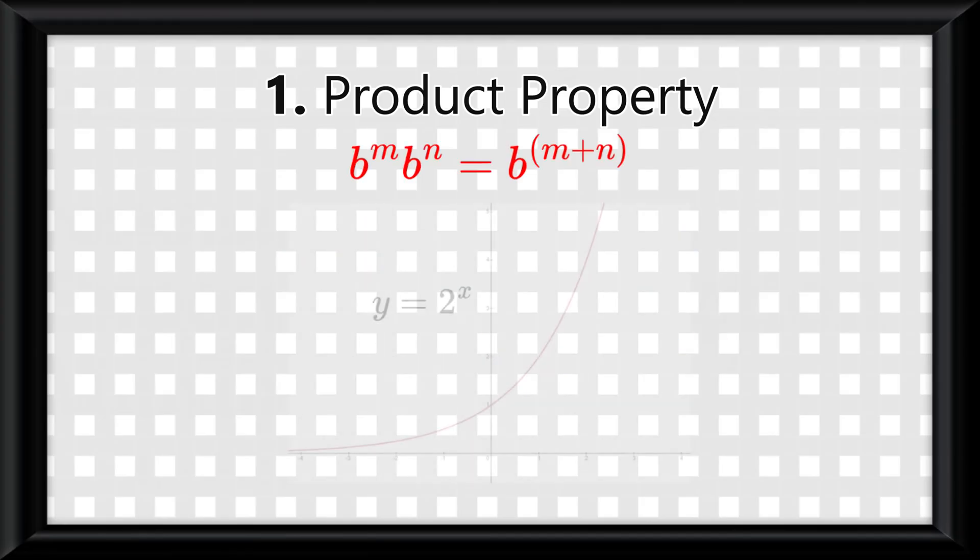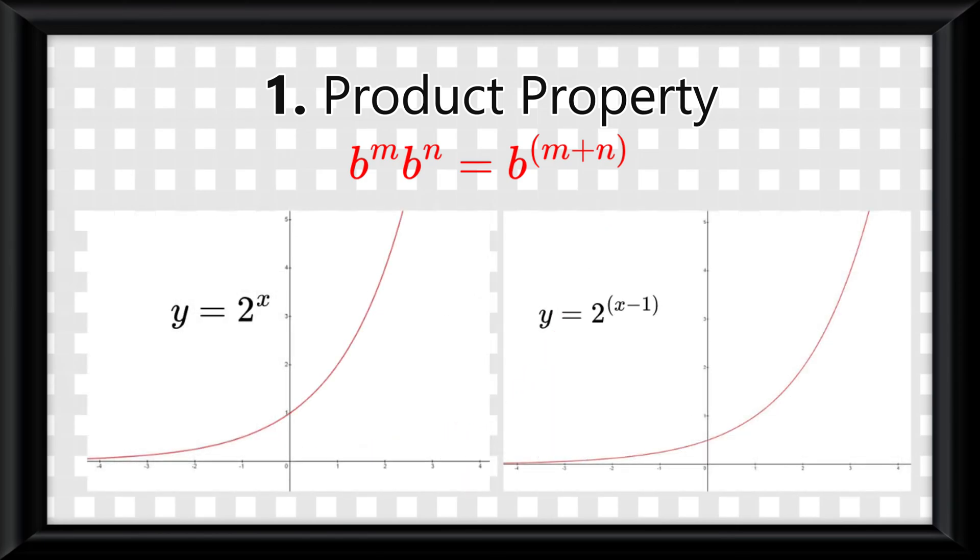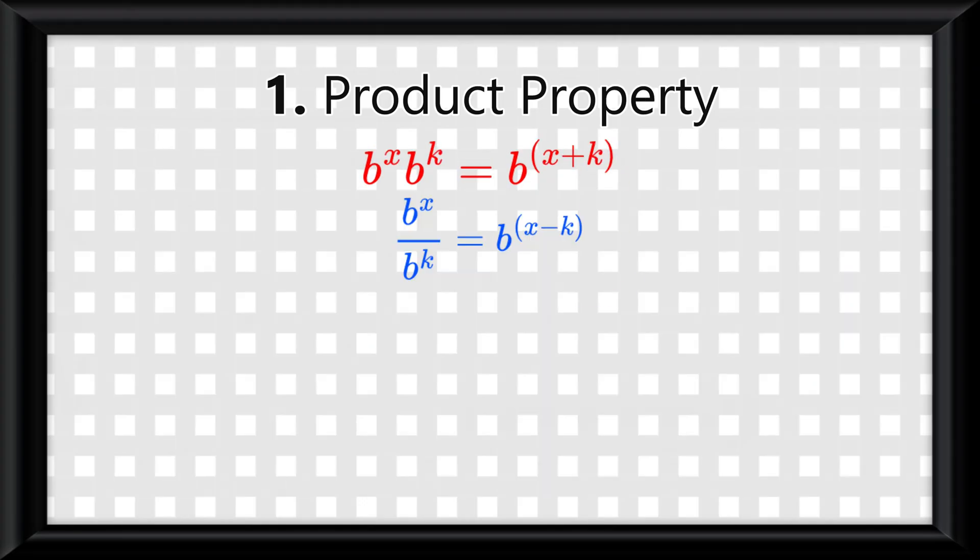To explain this one on a graph, we'll start with the parent function y equals 2 to the power of x. If we change this to y equals 2 to the power of x minus 1, we see the whole graph shift to the right by 1, making adding or subtracting anything from the x a horizontal translation of the graph.